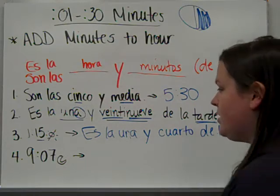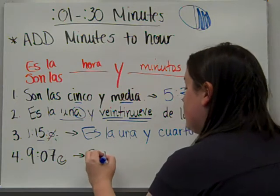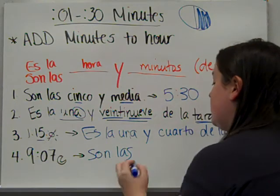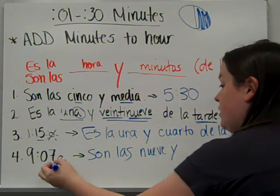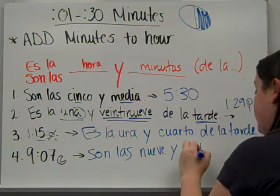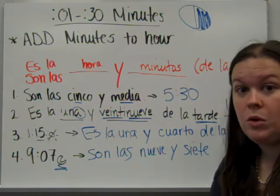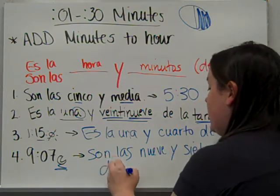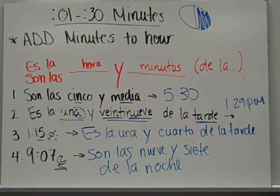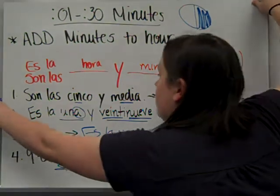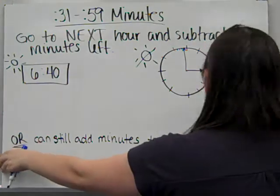One more. Nine oh seven. So nine. More than one hour. So we're going to say son las. Nine is nueve. So there's some minutes. Nine and. Seven. Siete. So nine oh seven. And then that is evening. Or night time right there. So. De la noche.